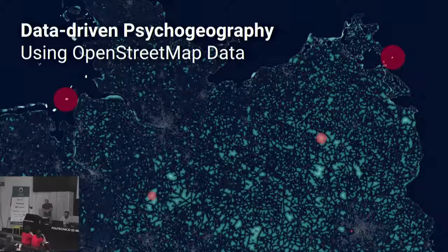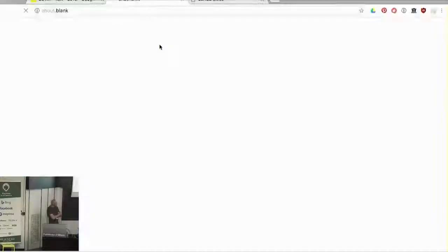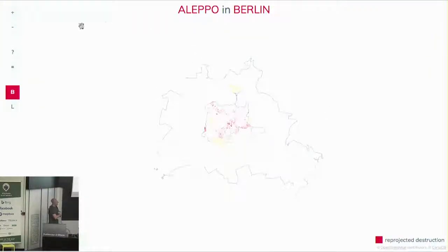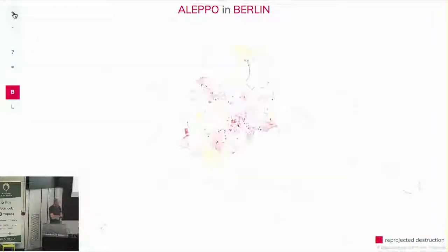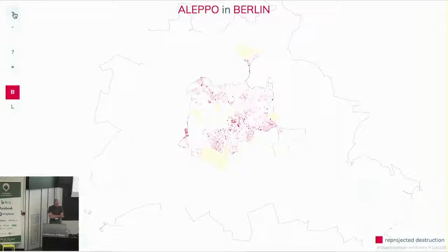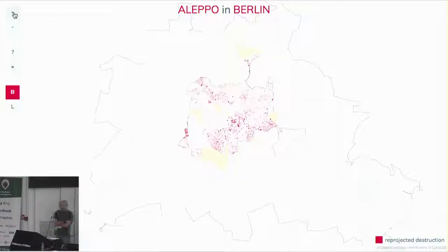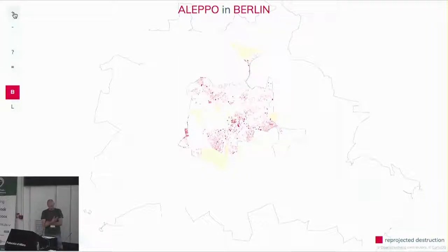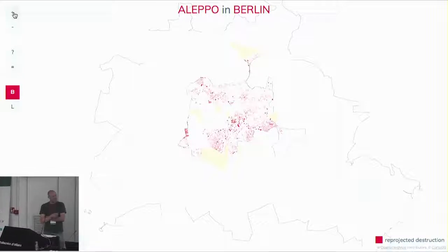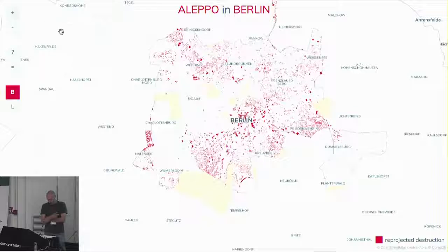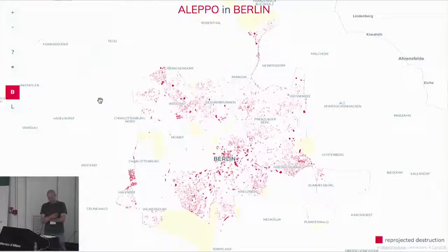The first work I will show you today, 'Reprojected Destruction', came to be in 2017 when the fighting in Aleppo took place and the city got heavily destroyed. I wanted to grasp the extent of destruction — what is being talked about in the news, and how can I approach this issue as a mapmaker? I did some research and came across an interesting dataset from the UN, which showed how strongly the buildings were damaged in the East District of Aleppo.